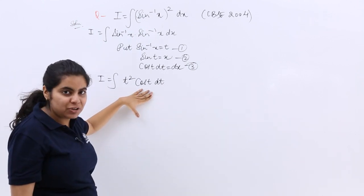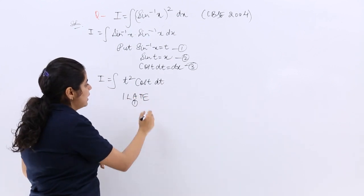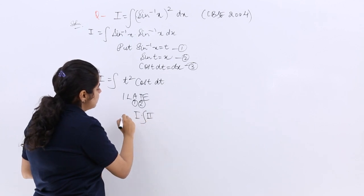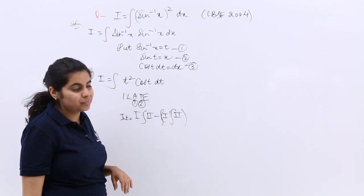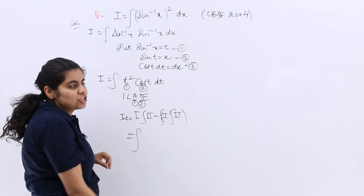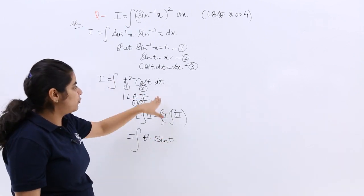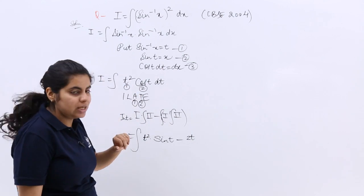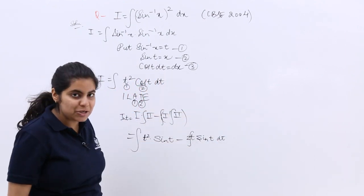Now ILATE I can use because I have trigonometric and algebraic. So first and second you have decided. The formula is: first function into integration of second minus differentiation of first into integration of second, whole integration. Integration would be t squared cos t, wherein t squared is your first function, cos t is your second function. First function into integration of second—and you know sin's differentiation was cos—so it is 2t into integration of second, whole integration.